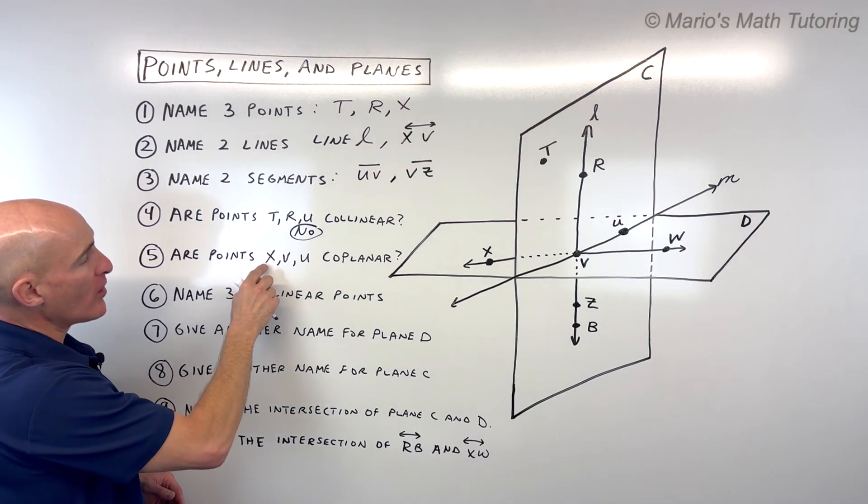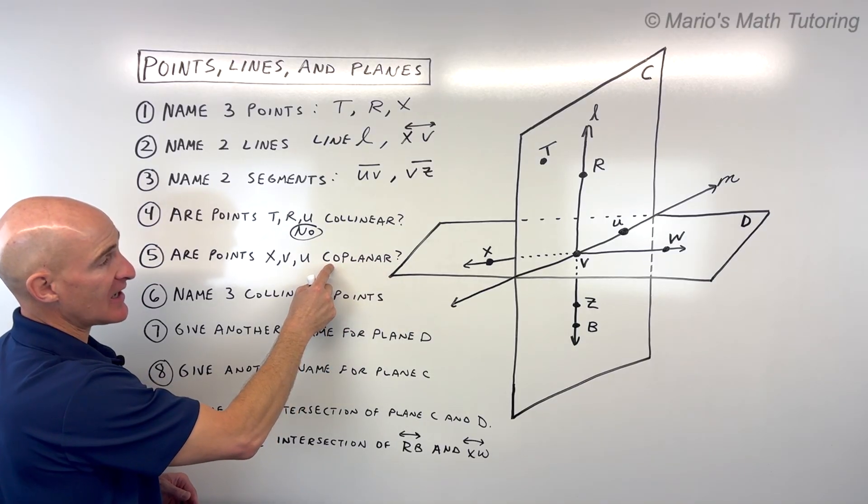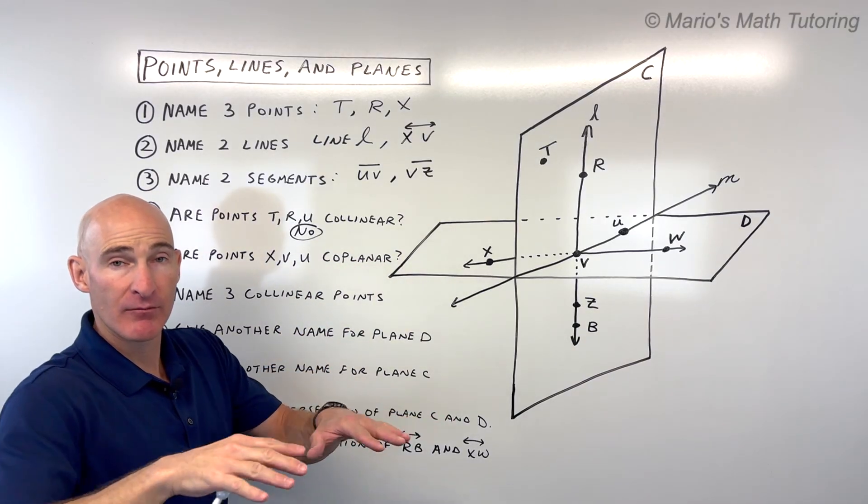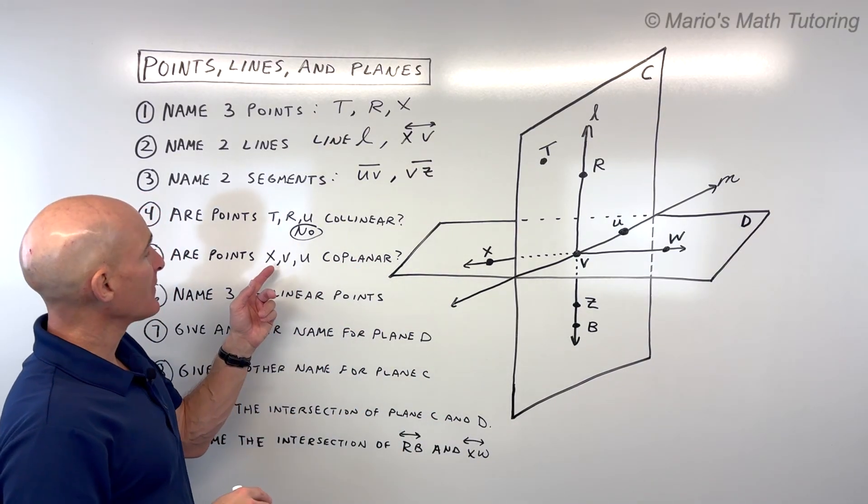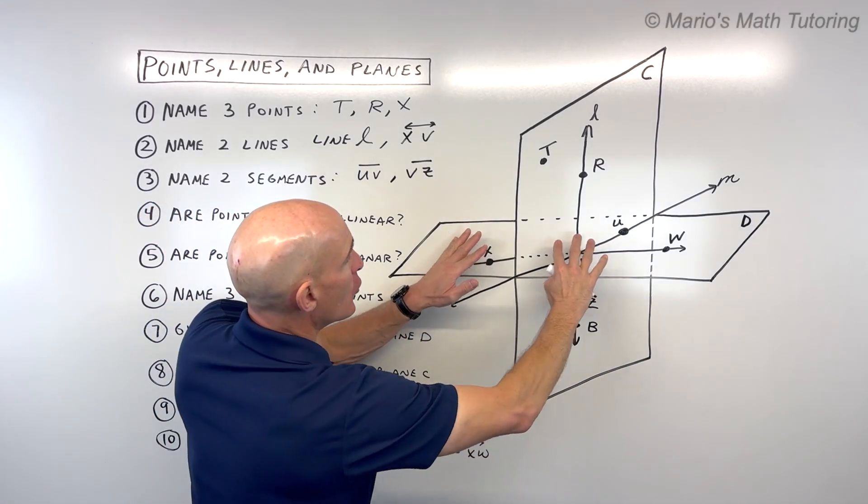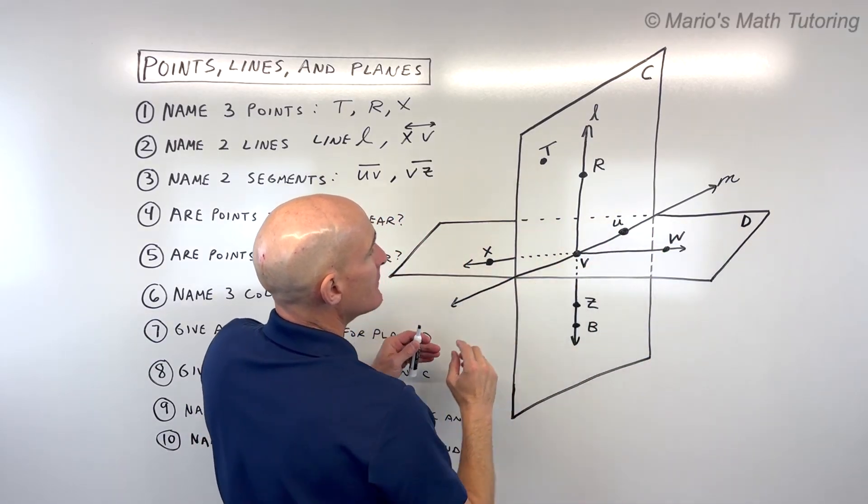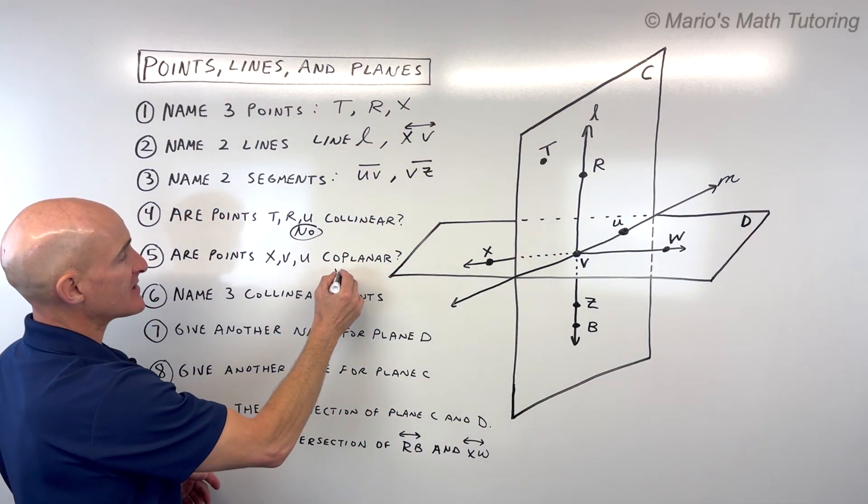Number five, are points X, V, and U coplanar? Co means same, planar means in the same plane or flat surface. Are X, V, and U coplanar? Yes, it looks like they're here in this plane D, this flat horizontal plane. I'm going to say yes.